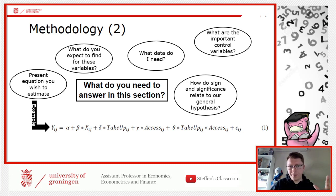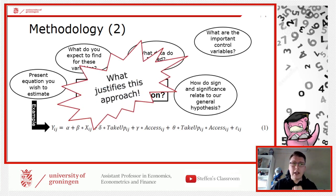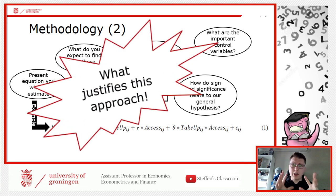But above all, the most important thing you have to do is what justifies this approach. Regardless of what you choose, you have to explain to all the readers why is this approach appropriate. I cannot stress this enough. This is so important. So many students miss this part. They just say, I use OLS because that's what I learned in class. That doesn't really sell, does it?